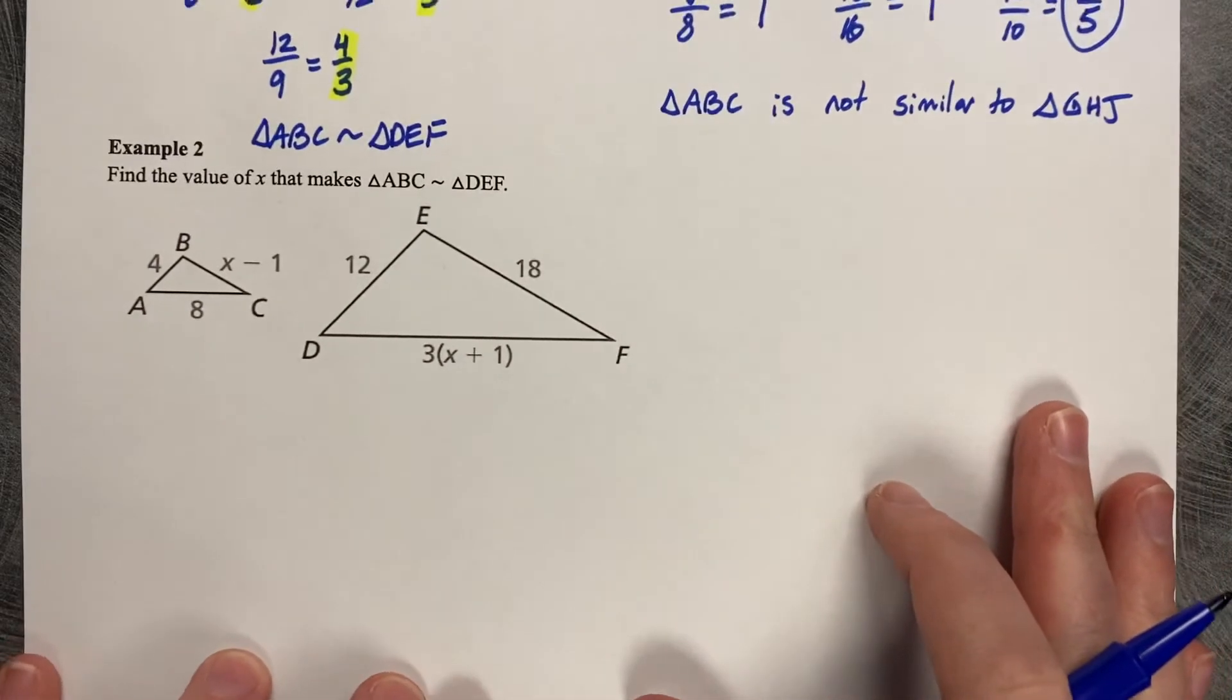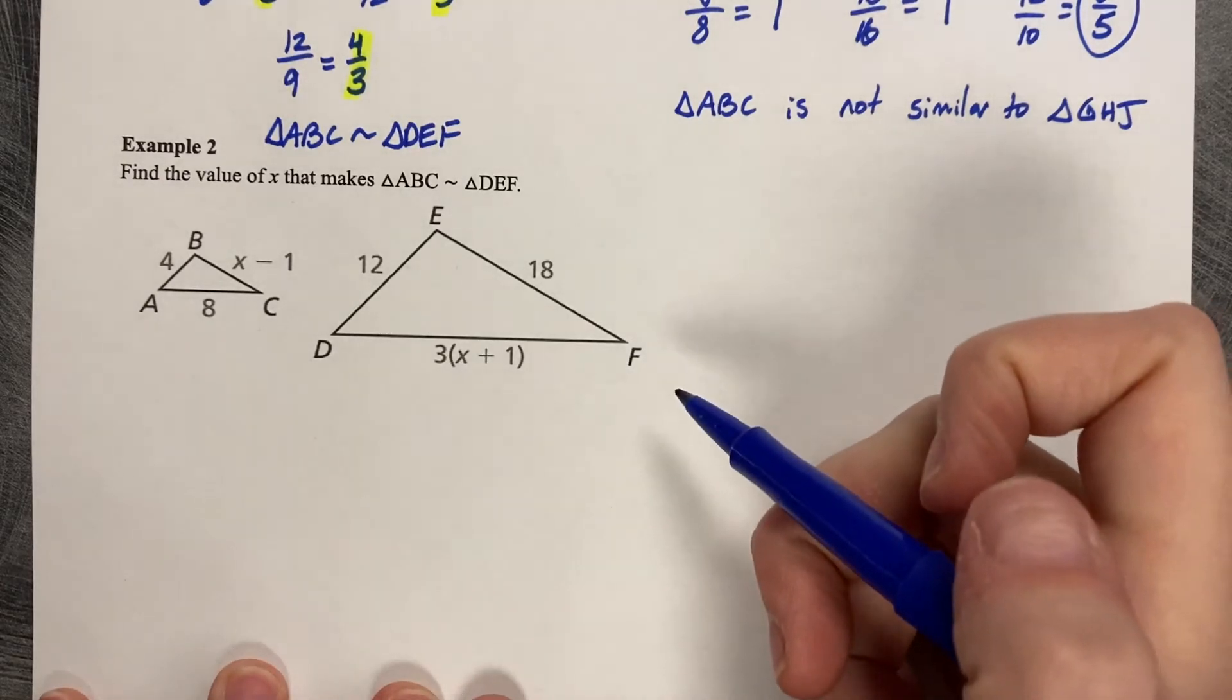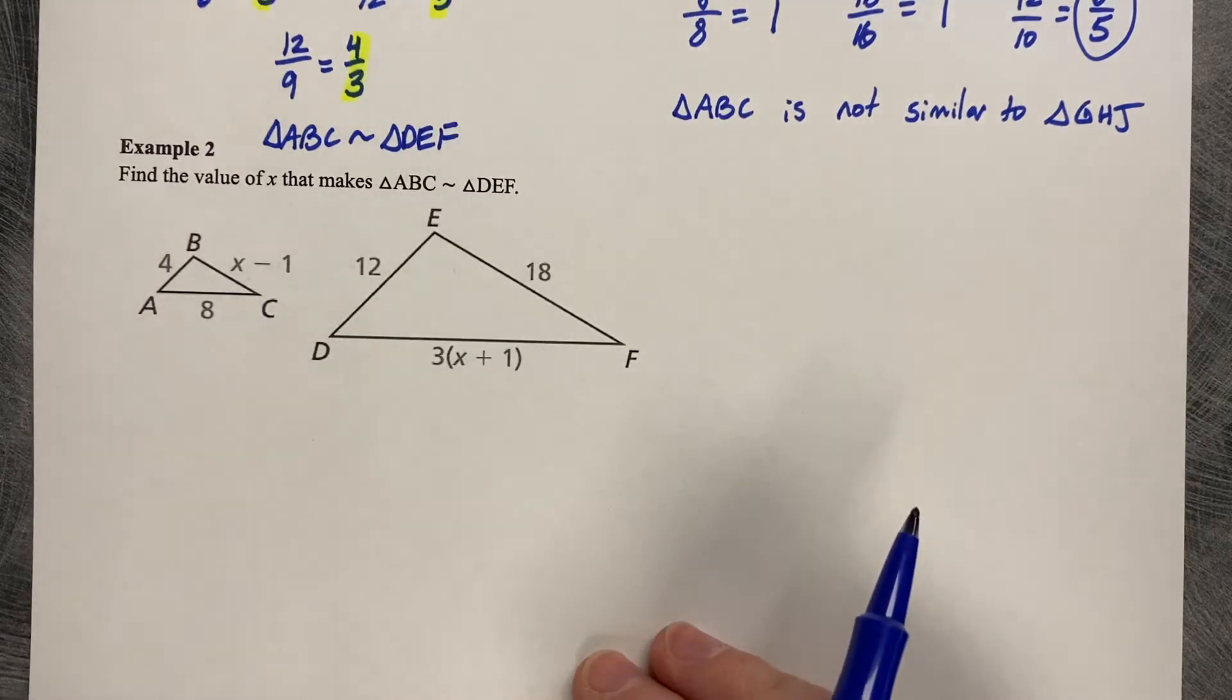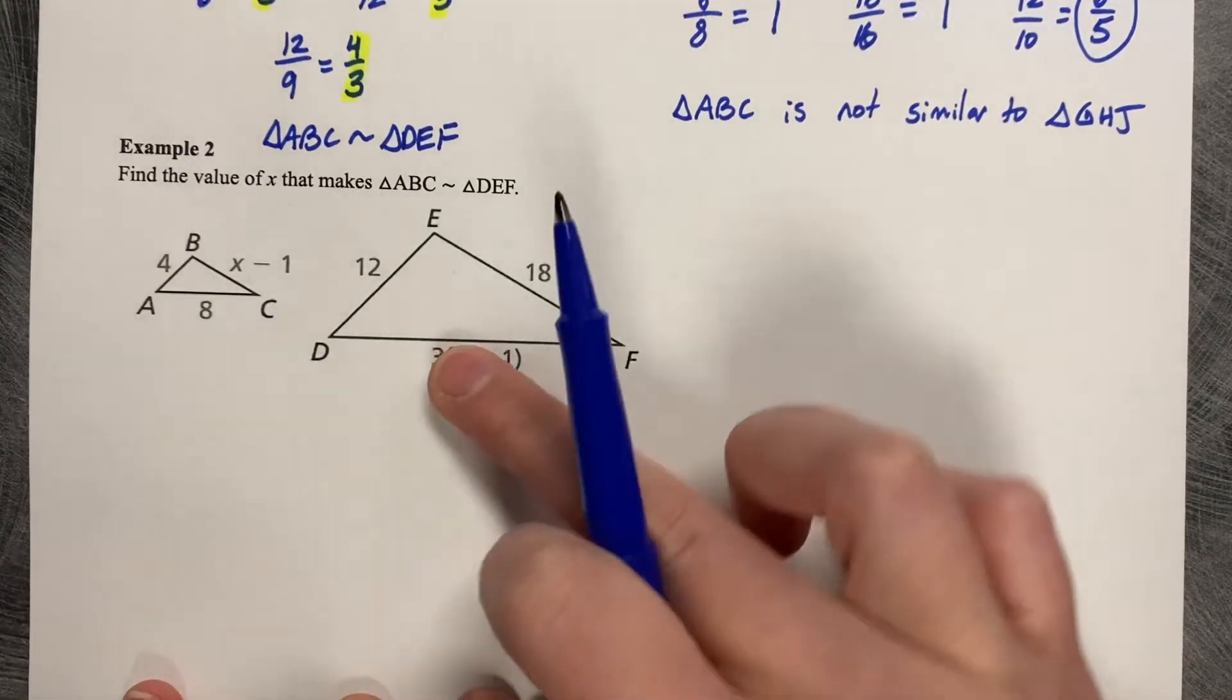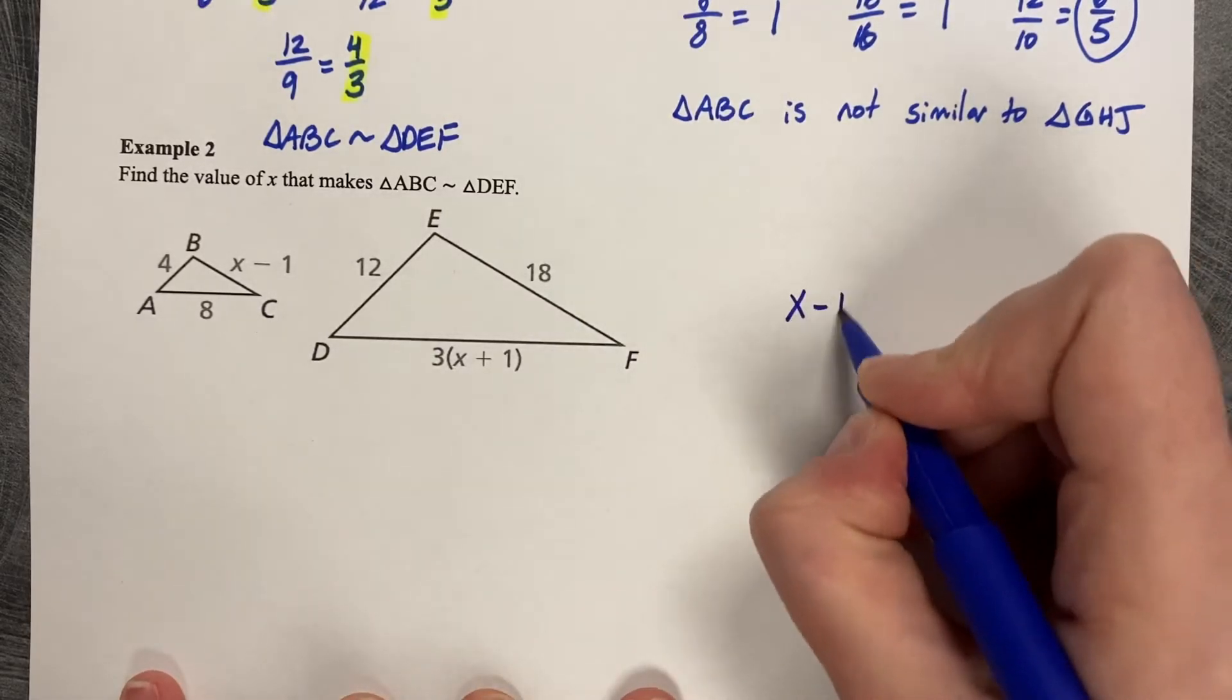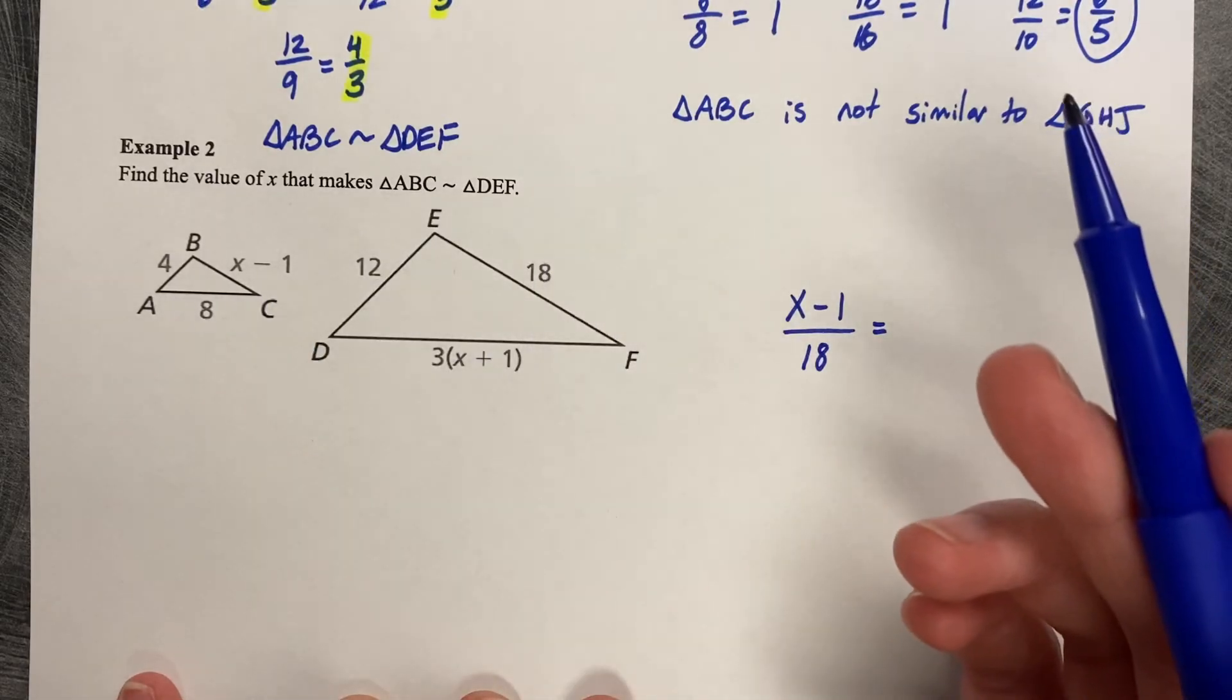All right, example number 2. Find the value of X that makes triangle ABC similar to DEF. Not congruent, because clearly these are not the same size. They are not congruent to each other. We want to make them proportional. So we're going to set up a proportion to help us solve for X. There are many different ways you can set these proportions up. I'm not going to work with the 3 times X minus 1, just because that expression is kind of hard to work with. So let's work with just the X minus 1, and let's compare that to 18. So X minus 1 is compared to 18, and then you just choose two other sides that are friendly. 4 is to 12.